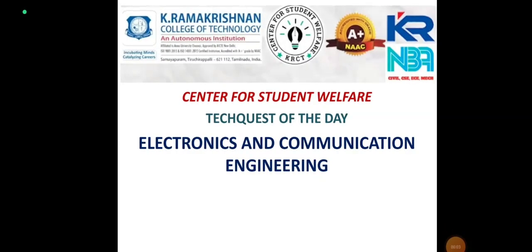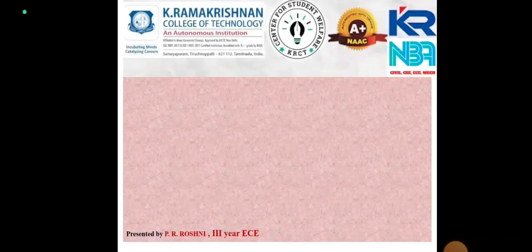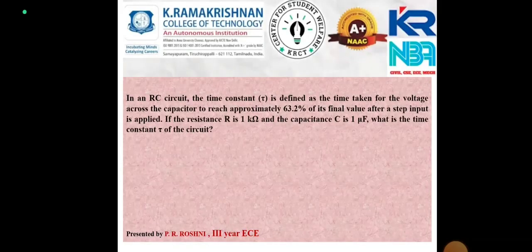The question is: in an RC circuit, the time constant is defined as the time taken for the voltage across the capacitor to reach approximately 63.2% of its final value after a step input is applied. If the resistance R is 1 kΩ and the capacitance C is 1 µF, what is the time constant Tau of the circuit?